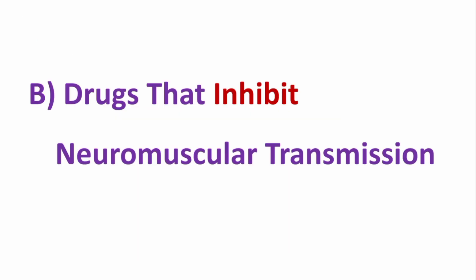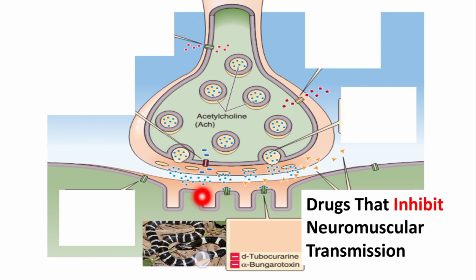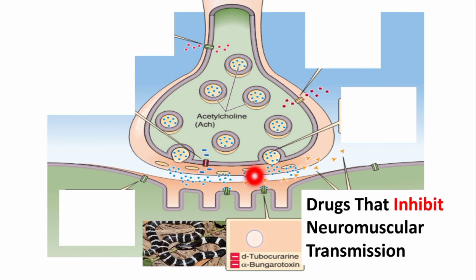The second broad category is the drugs which inhibit or decrease neuromuscular transmission, and these can be subclassified into three groups. Number one are curare-form drugs like D-tubocurarine and alpha-bungarotoxin, which is found in snake venom. These drugs competitively inhibit the acetylcholine receptor — they bind with it and prevent acetylcholine from binding, so neuromuscular transmission is not mediated and is decreased or inhibited.